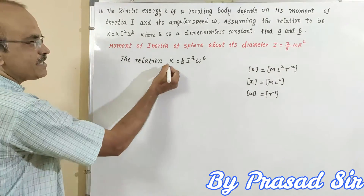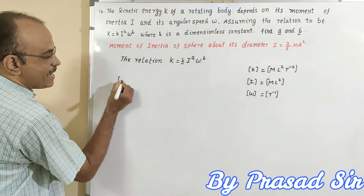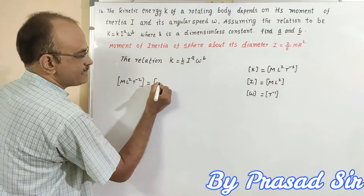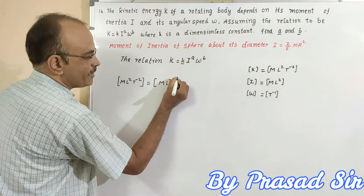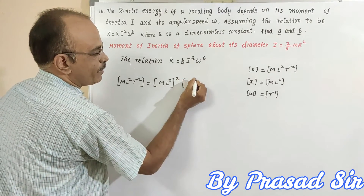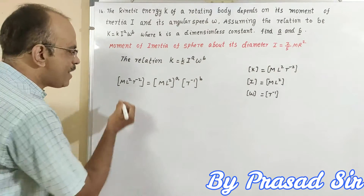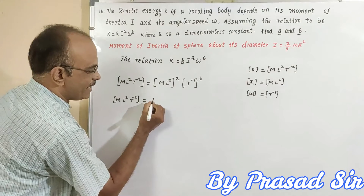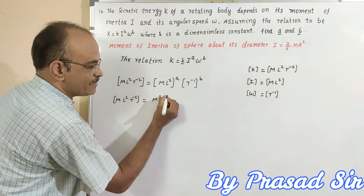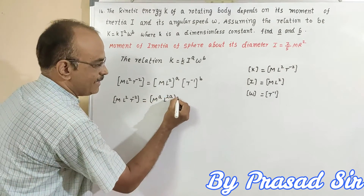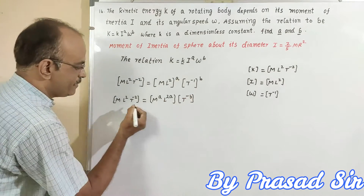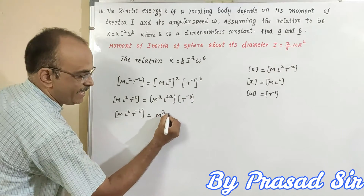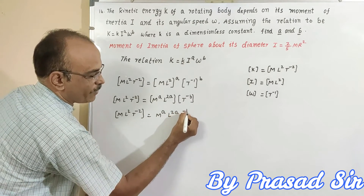Now I will write the dimensions. K, which is M L squared T to the power of minus 2, equals I to the power of a — which is M L squared to the power of a — and omega to the power of b — which is T to the power of minus 1, whole to the power of b. This gives: M L squared T to the power of minus 2 equals M to the power of a, times L to the power of 2a, times T to the power of minus b.